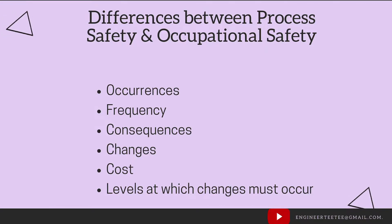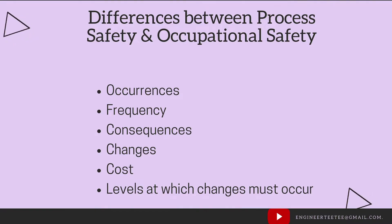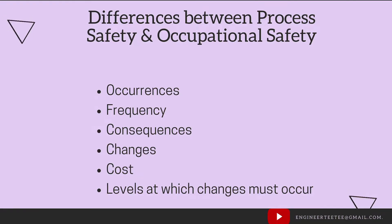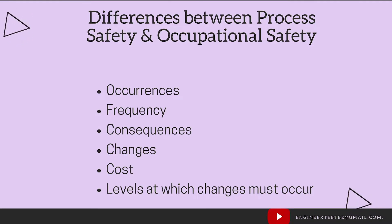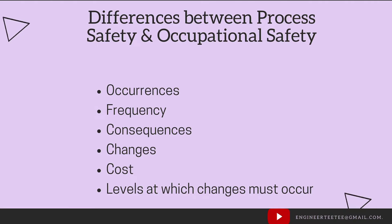Next, we can talk about frequency. Process safety incidents generally happen at a lower frequency, whilst occupational safety incidents happen at a higher frequency — mainly because these involve human beings, so it's very easy for someone to trip if the mitigation measures are not in place.